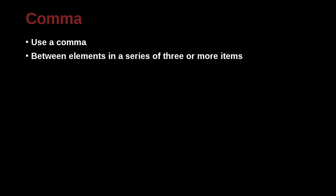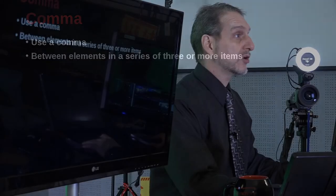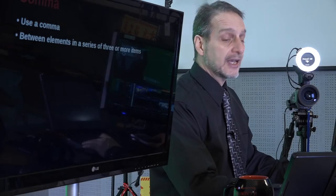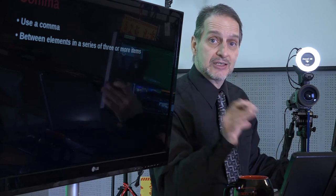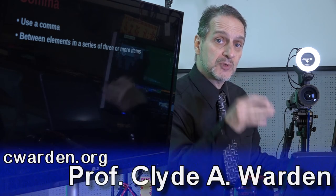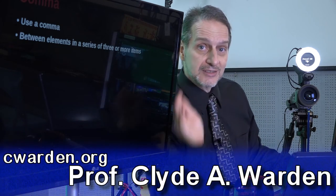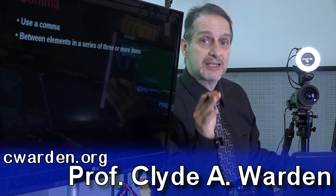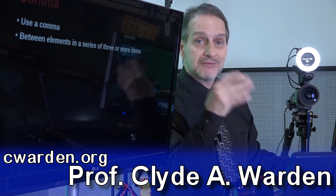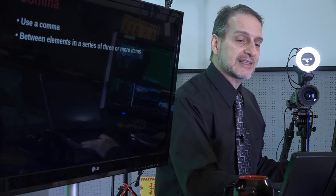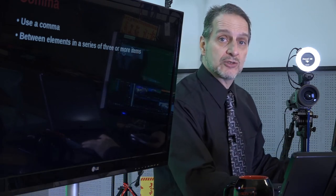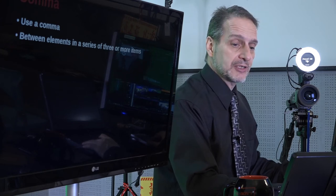Let's take a look at commas now. In the case of commas, use commas between elements in a series of three or more items — that is a list. So first we did A, B, C, and finally we did D. A series like that is where you use a comma very typically.